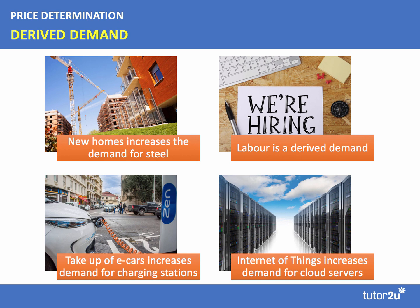Wood is another good example — a product where a lot of the demand comes from the uses to which wood can be put, such as furniture or fencing. Demand for labour in the labour market is clearly a derived demand. For example, if more people are flying, an increase in demand for air travel will lead to an increase in the demand for airline pilots and related employment in the travel sector. The growing use of e-cars is going to increase the demand for charging stations — there's a derived demand.